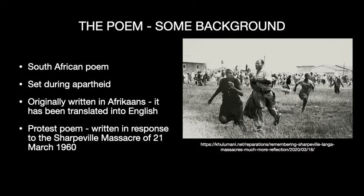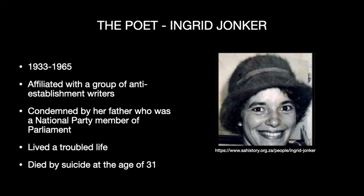Our poet is Ingrid Jonker. She lived between 1933 and 1965. She was affiliated with a group of anti-establishment writers who were writing against the conventions of the time. She was condemned by her father, who was a National Party member of parliament. She lived a troubled life and died by suicide at the age of 31. Nelson Mandela actually read one of her poems in his inaugural State of the Nation address in 1994.